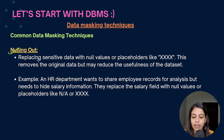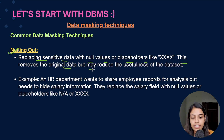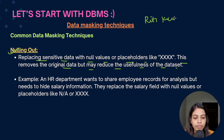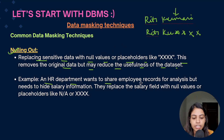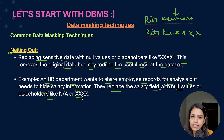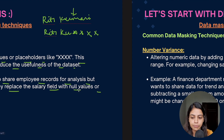The fourth technique is nulling out: replacing sensitive data with null values or placeholders like 'X'. This removes the original data but may reduce the usefulness of the dataset. For example, a name like 'Reethi Kumari' might appear as 'Reethi XXXXX' with the last name hidden. An HR department sharing employee records for analysis might replace salary fields with null values or placeholders like 'XXXXX' to hide the actual salary information.